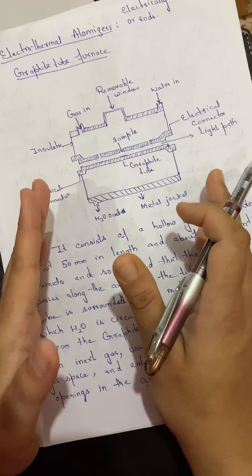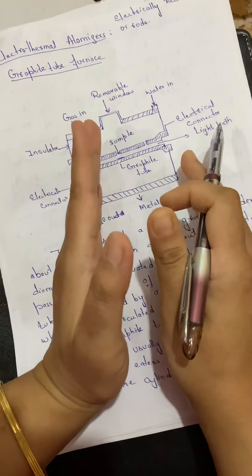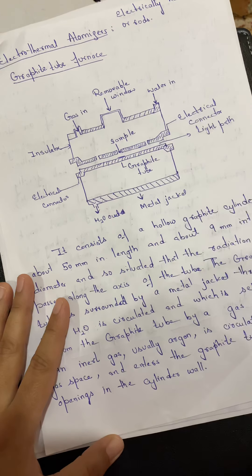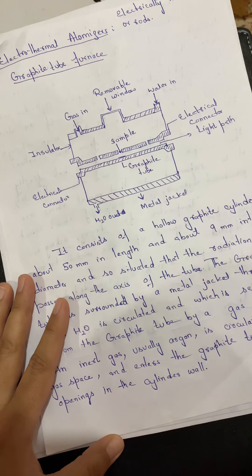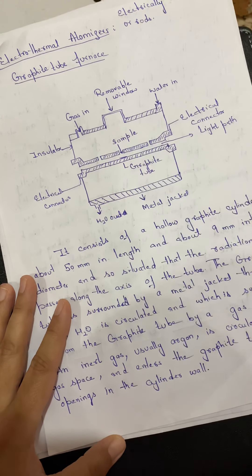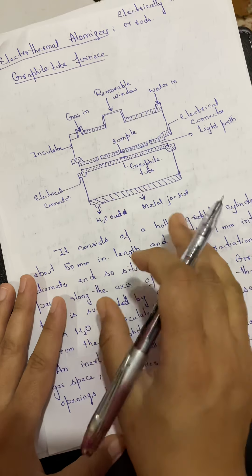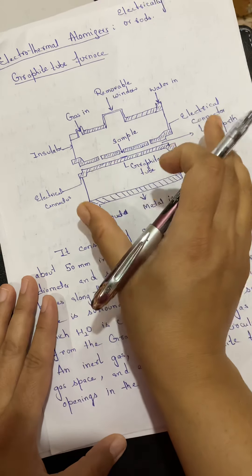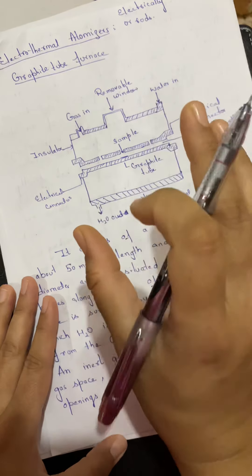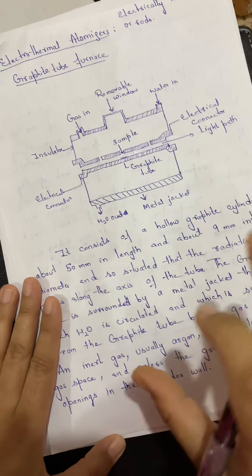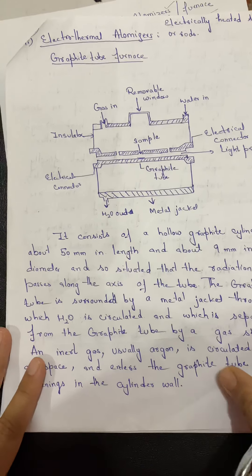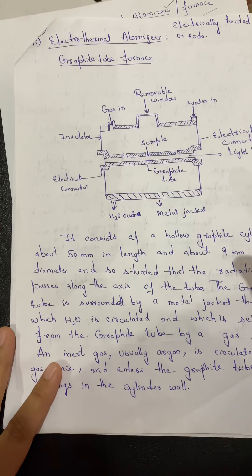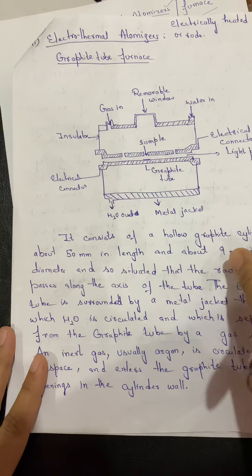Electrothermal atomizers are part of the larger AAS system: there is a lamp, then the atomizer, then the light passes to the monochromator, and then to the detector — that arrangement is the same in all spectroscopy. The atomizer simply handles the preparation of the sample. You can now identify on your own what differences exist between flame atomizers and electrothermal atomizers.